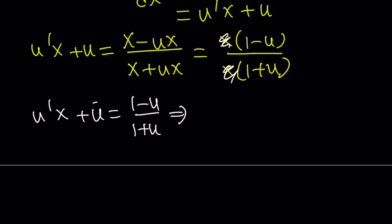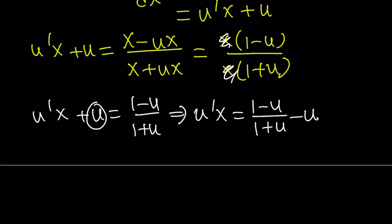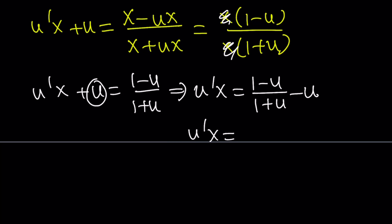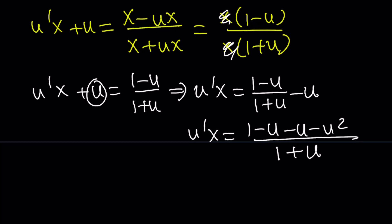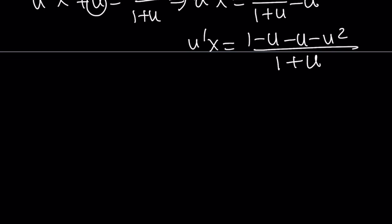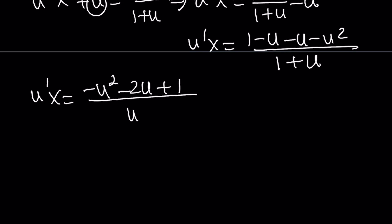Now at this point I want to isolate the u prime term on the right-hand side, so let's subtract u from both sides. We get (1 minus u)/(1 plus u) minus u. If you make a common denominator, we get 1 minus u minus u minus u² all over 1 plus u. Let's write it in a nicer form: u prime·x equals (negative u² minus 2u plus 1) divided by (u plus 1).